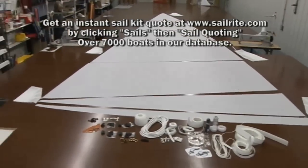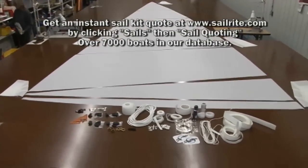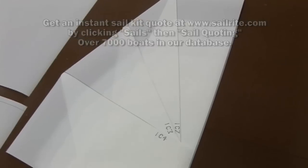Kits come complete with all the necessary hardware to build your sail. Even patches are cut out by the computer plotter system. Here are the patches that are pre-cut and labeled.